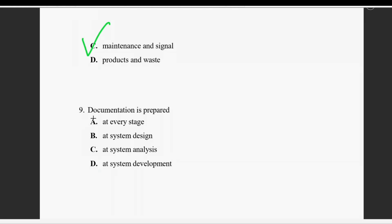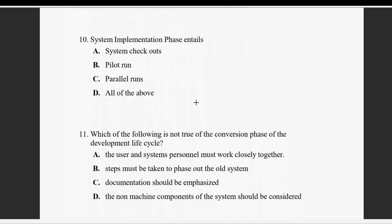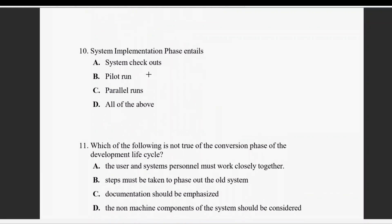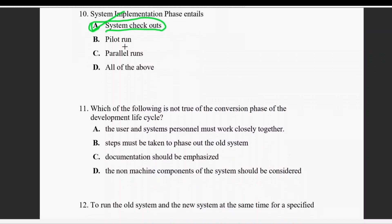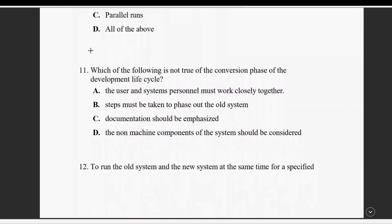Question number nine: documentation is prepared at every stage — at the level of paper code at every stage, including system design and system analysis. The system at implementation is also covered.